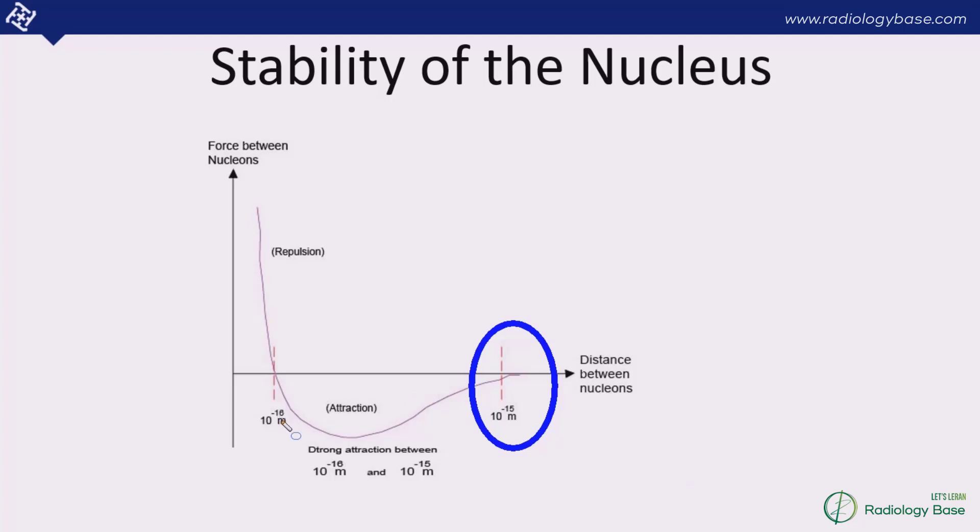When the distance reduces to 10^-16 meters, this strong nuclear force converts into a force of repulsion. If they are less in distance than 10^-15 they are attracted to each other, but as the distance reduces to 10^-16 then repulsion starts and they repel each other. This is not dependent on the charge as this happens with proton-proton, proton-neutron, and neutron-neutron interaction.